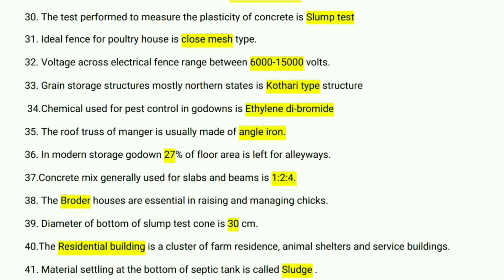Kothari type structure is used mostly in northern states. The chemical used for pest control in godowns is ethylene dibromide. The roof truss of the manger is usually made of angular iron. In modern storage godowns, 27 percent of floor area is left for aisles.